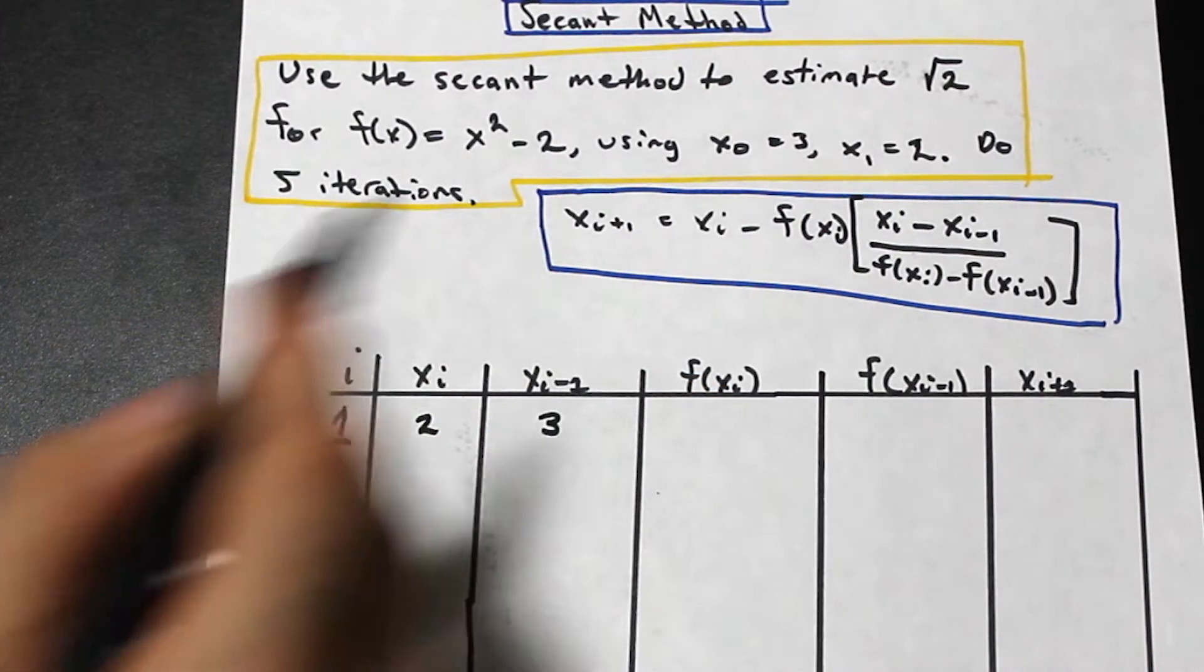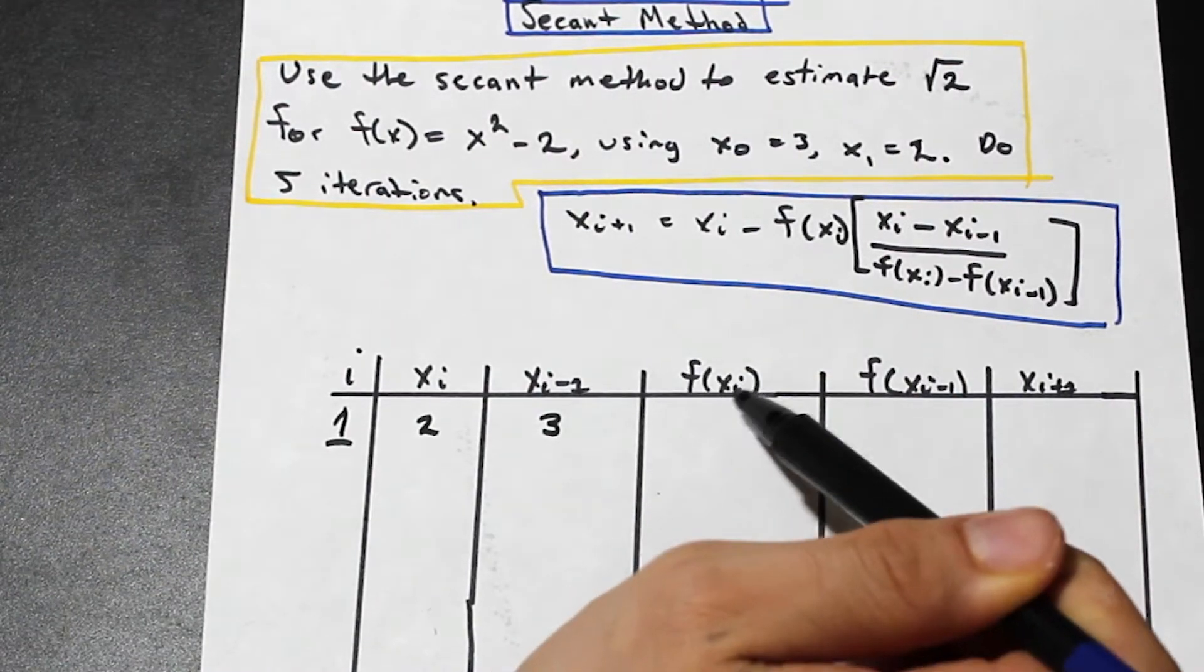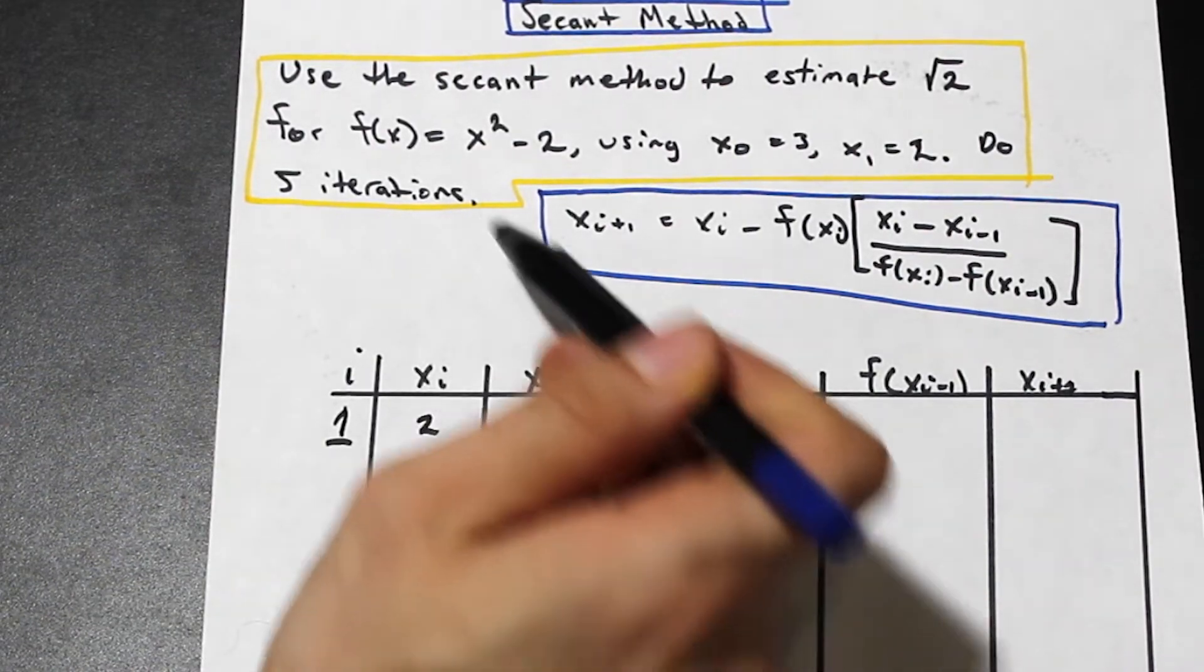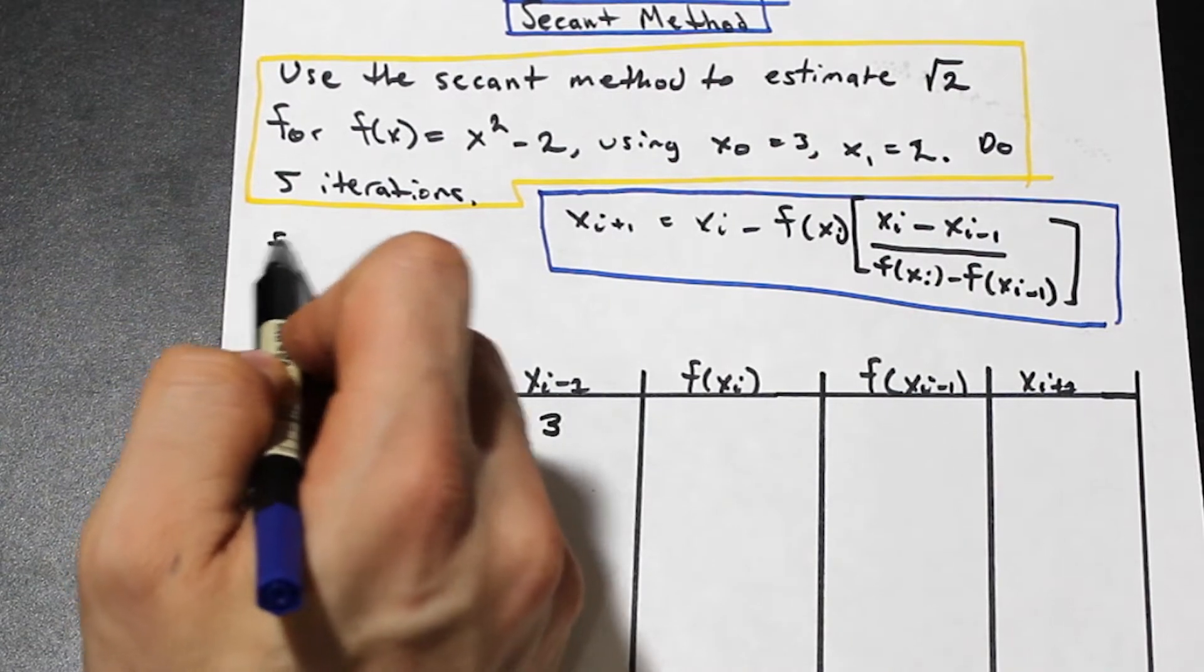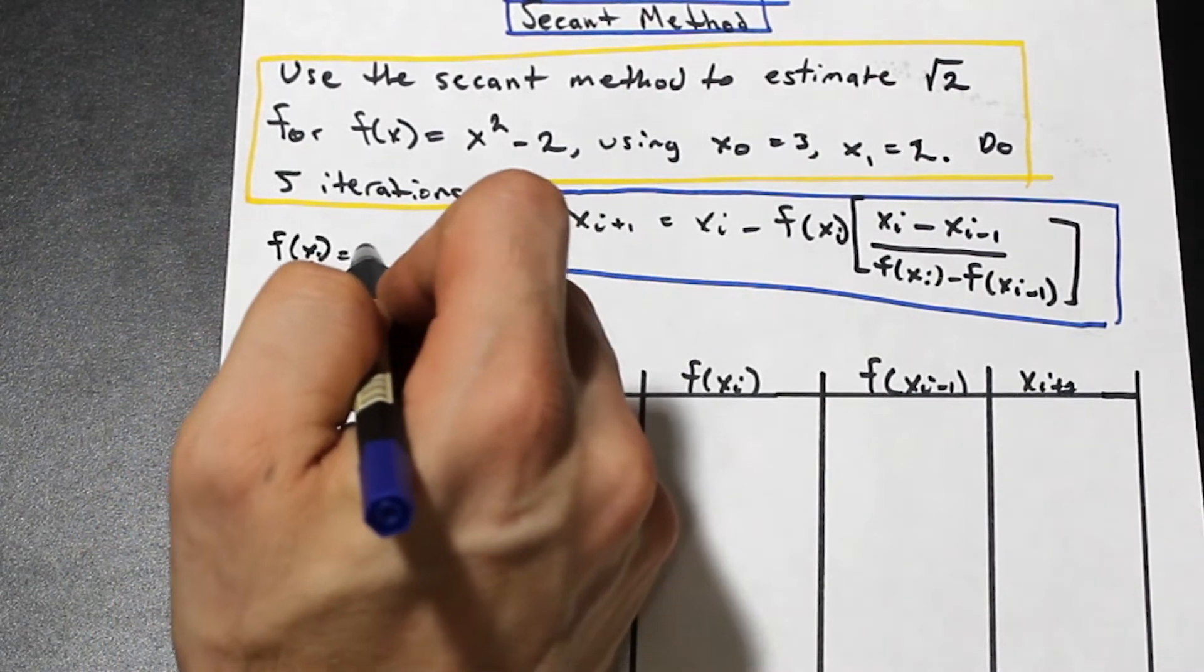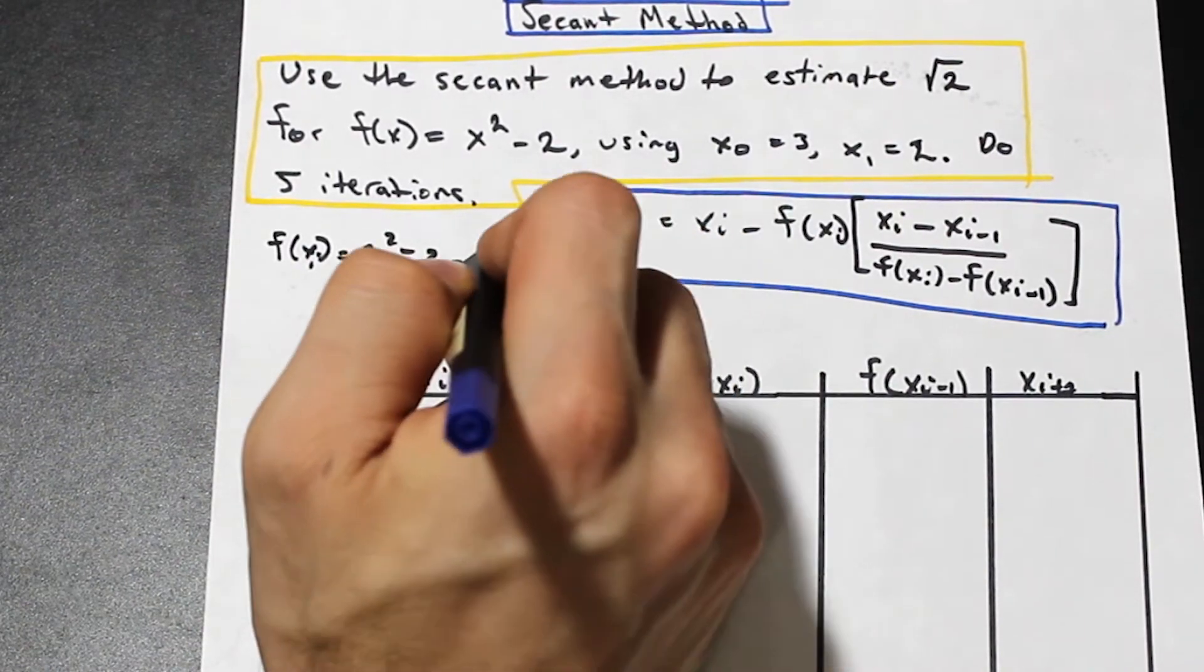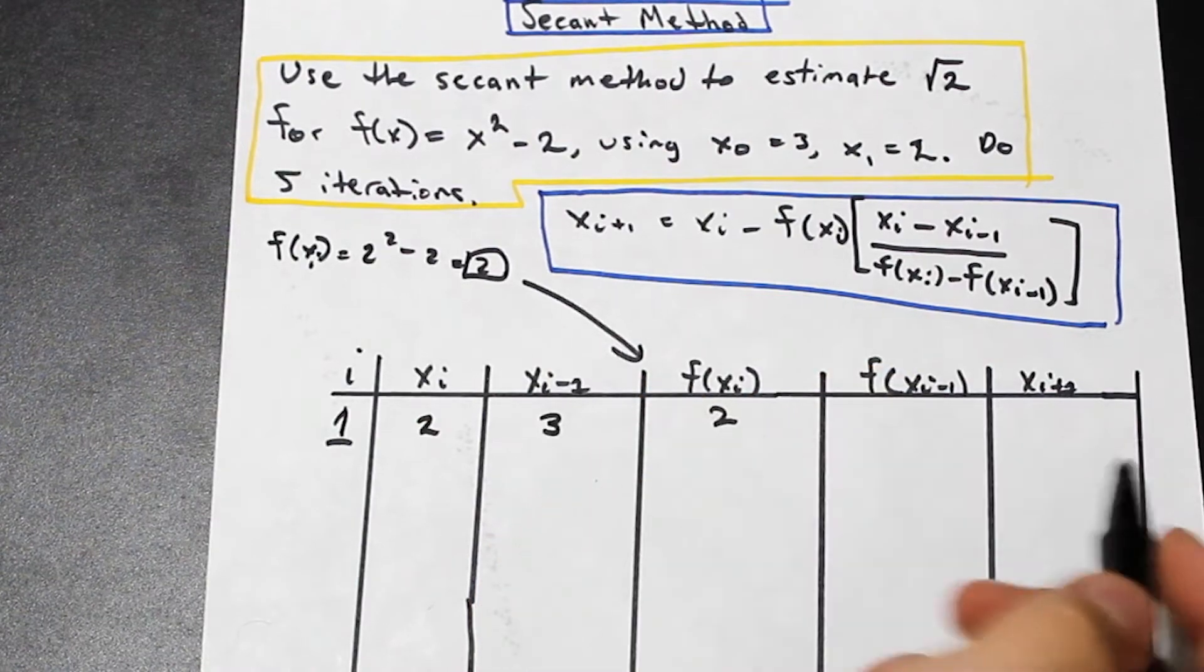Perfect. So now all we need to do is simply plug in. If you can just see this, we have f(xi). So we're just going to take xi, which is here, and we're going to plug it into our function. So for the first one, I'll just do the first one, and then I'm just going to fill this stuff out. So we're just going to plug in 2. So we have 2² - 2, and that's going to give us simply 2.